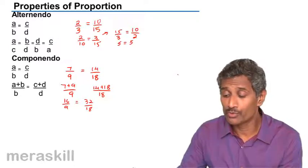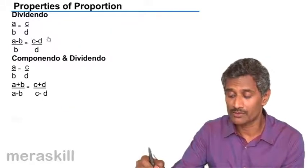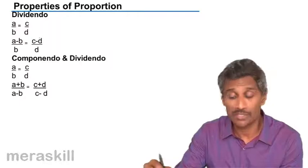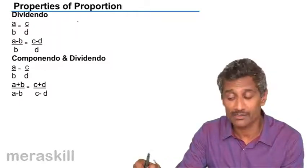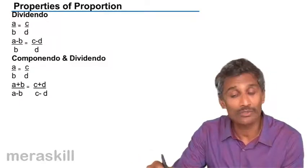Let's go to the next rule, that is dividendo rule. Much the same way, you have the dividendo rule here. A minus B upon B is also equal to C minus D upon D if A/B equals C/D.